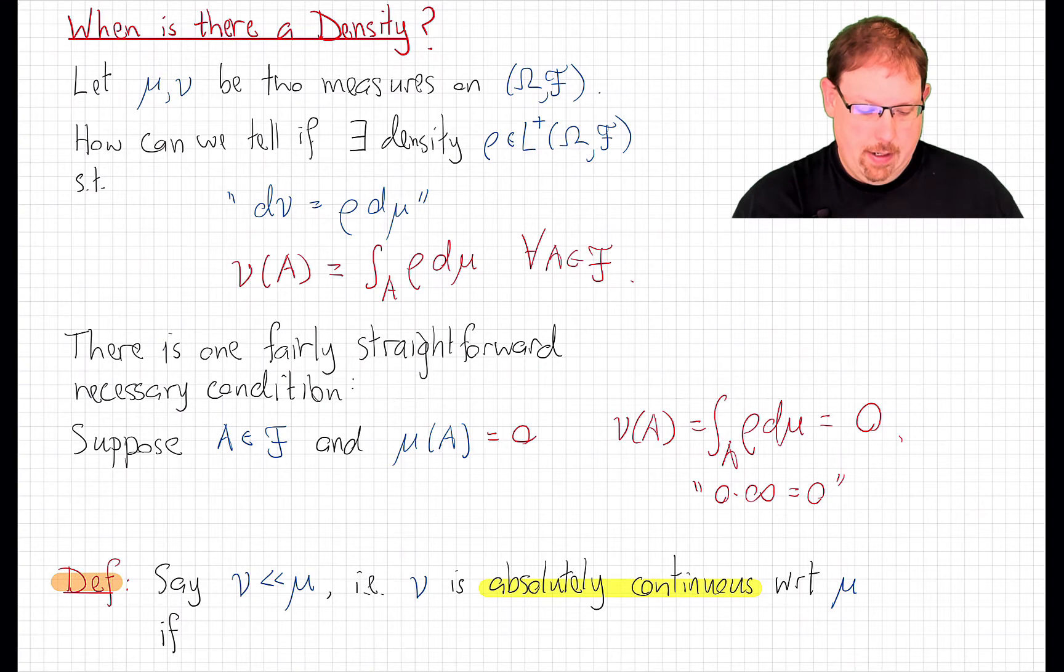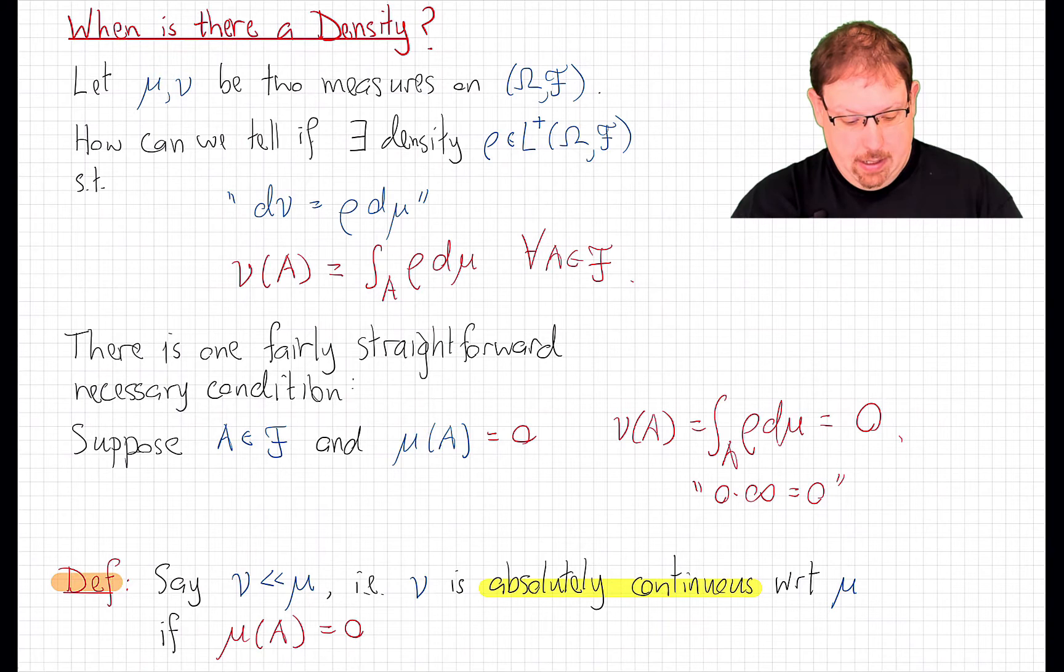Let's formalize this notion. Given two measures, nu and mu on the same measurable space, we say that nu is absolutely continuous with respect to mu if, whenever the mu measure of a set is zero, the nu measure of that set is also zero.